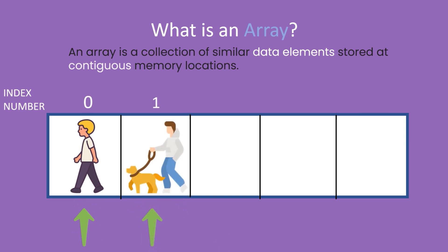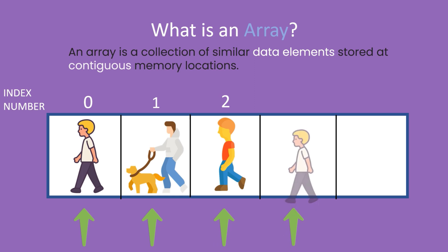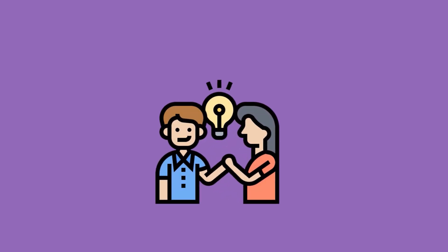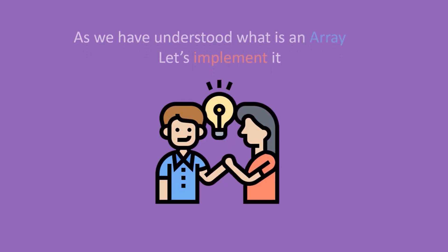Let's insert five people into the array and track the index numbers of the array. The starting index number of the array is zero. Now that we have understood what an array is, let's implement it.